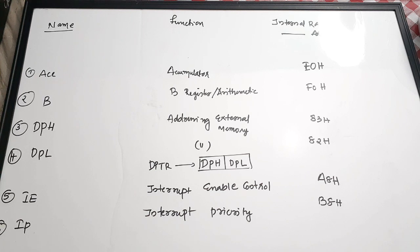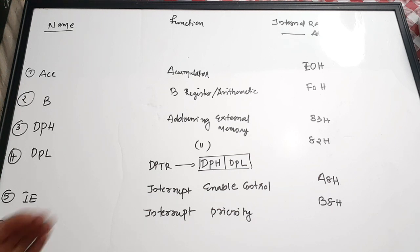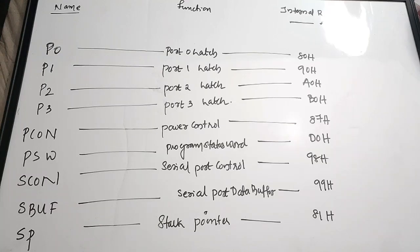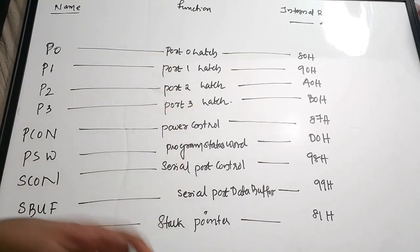The Interrupt Priority (IP) register is used to set and reset the priority of interrupts. The next video in this microcontroller series will cover interrupts in detail — including maskable and non-maskable interrupts and these registers. The address of IP is B8H.